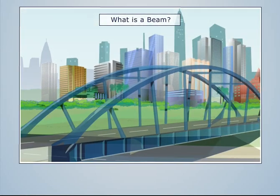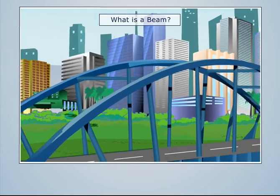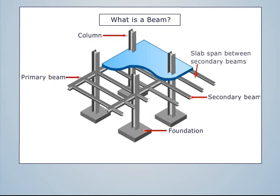You must have seen bridges, buildings, industries, etc. where structures are supported by steel and concrete frames. Look at the small structure of a building. It is having foundation, vertical members called columns, and horizontal members as beams and slabs.